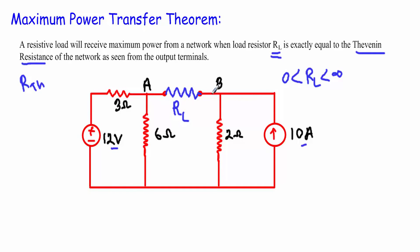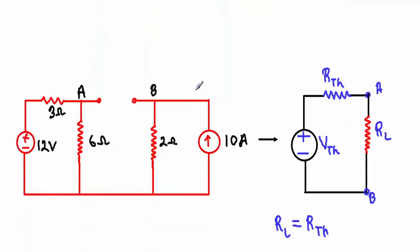If I remove the load resistor from across terminals A and B, we get an open-circuit condition. If you are familiar with the Thevenin equivalent circuit, you know that I can now convert this circuit across terminals A and B into a Thevenin equivalent circuit.